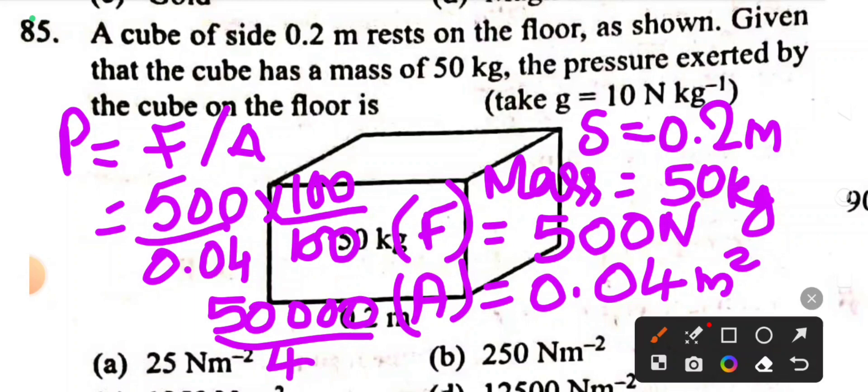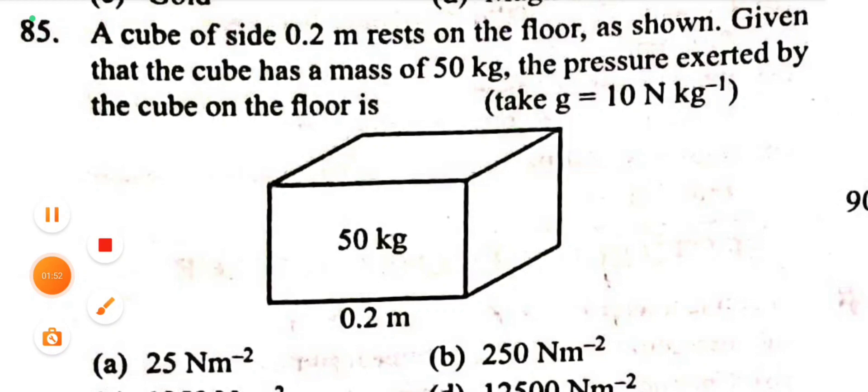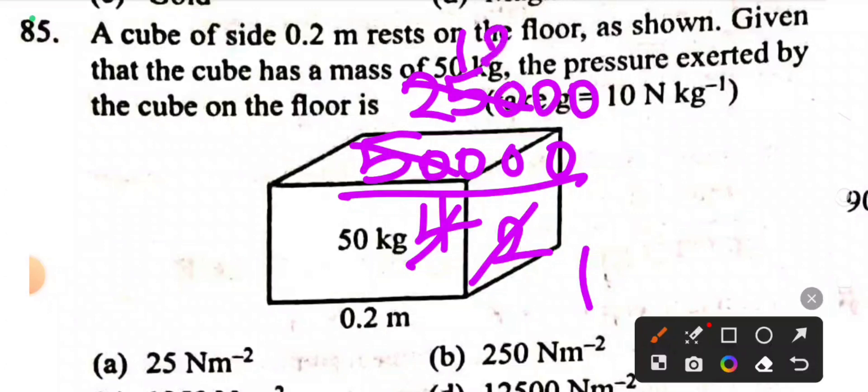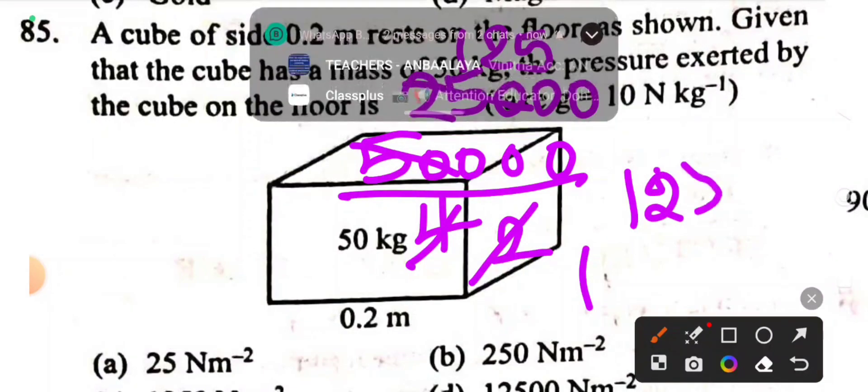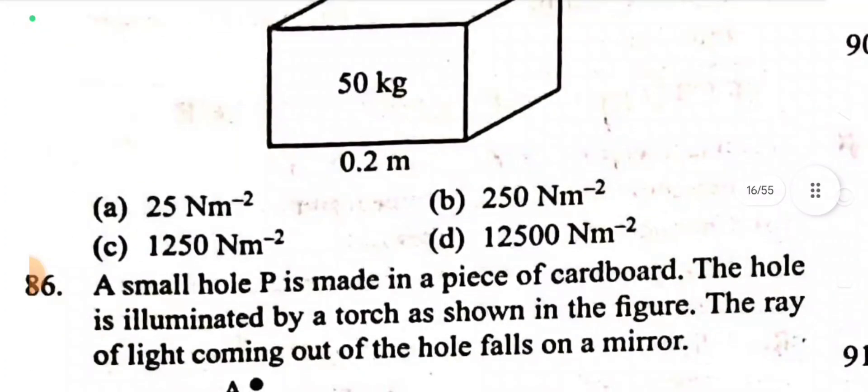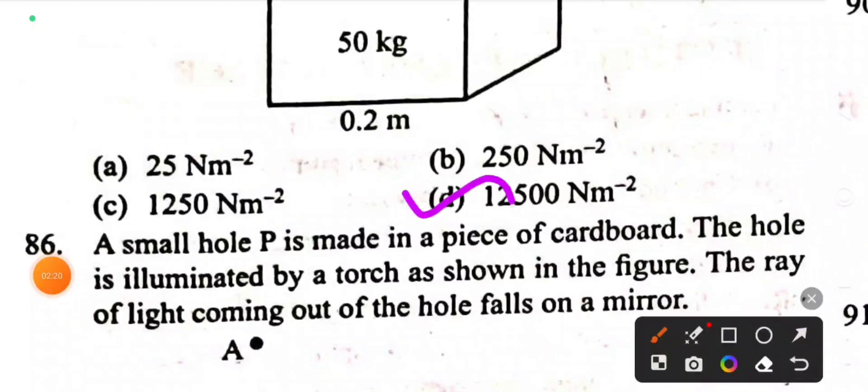So the answer is 50,000 divided by 4, which equals 12,500 newton per meter square or Nm^-2.